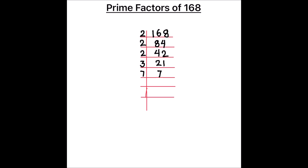7 is only divisible by 7 itself. 7 times 1 is 7, so our number is fully divided. All the numbers on the left hand side of the ladder are the prime factors of 168. So the prime factors of 168 are 2 times 2 times 2 times 3 times 7.